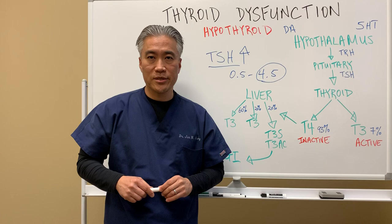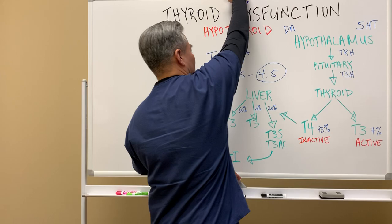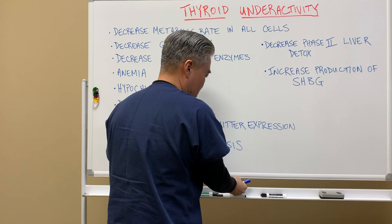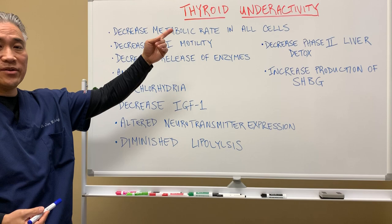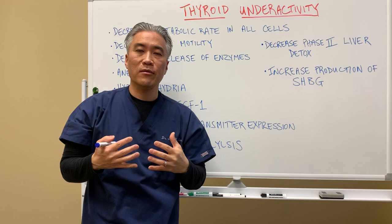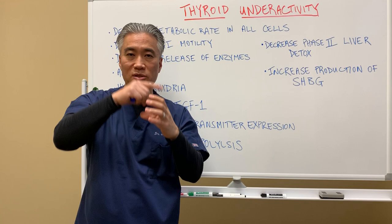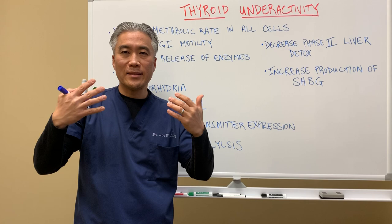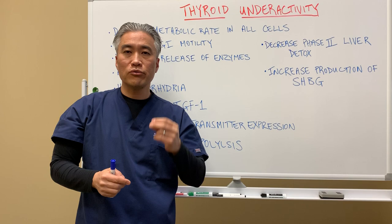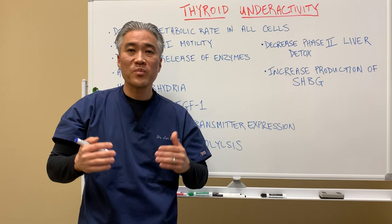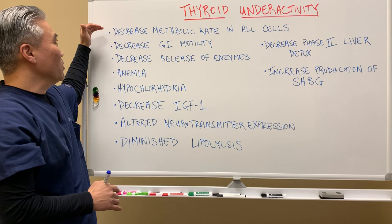Now let's talk about how thyroid hormone impacts the body. People don't realize that every single cell has receptors for thyroid hormone — not just on the outside, but inside the cell, where it influences actual DNA expression. Thyroid hormone is crucial for regulating your metabolic rate; without enough thyroid hormone, everything slows down and metabolic rate decreases in all cells.